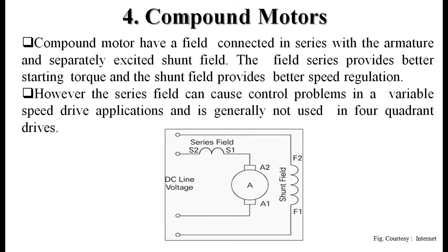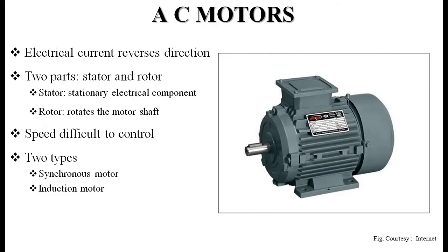Compound motors have a field connected in series with the armature and a separately excited shunt field — so both a series field and a shunt field are present. The series field provides better starting torque and the shunt field provides better speed regulation, combining the advantages of both motor types. However, the series field can cause control problems in variable speed drive applications and is generally not used in four-quadrant drives.